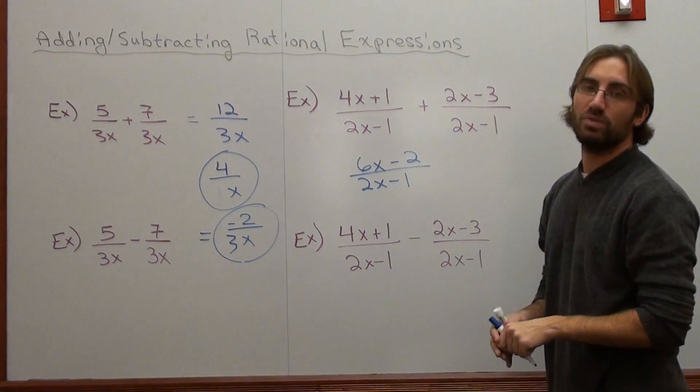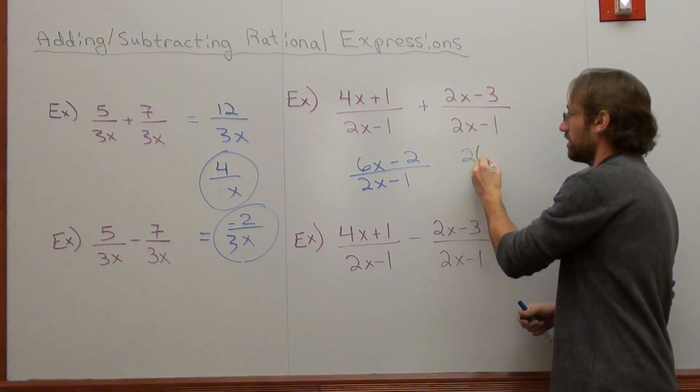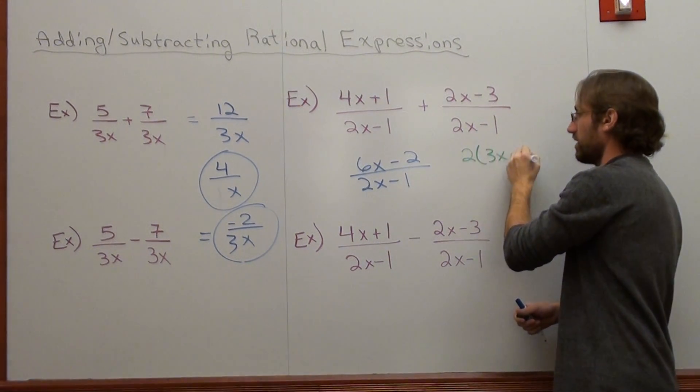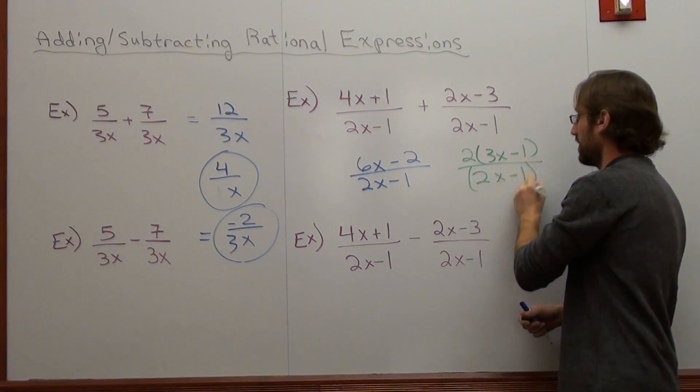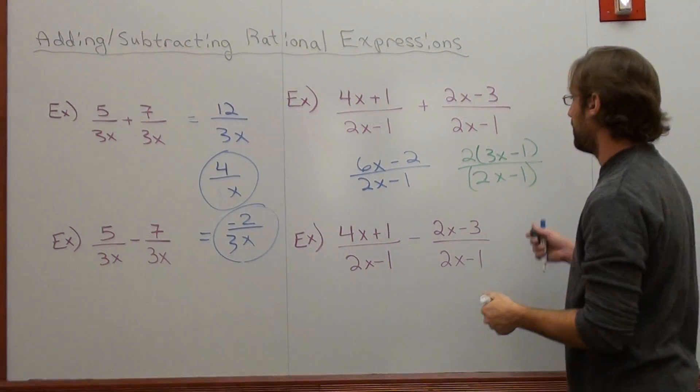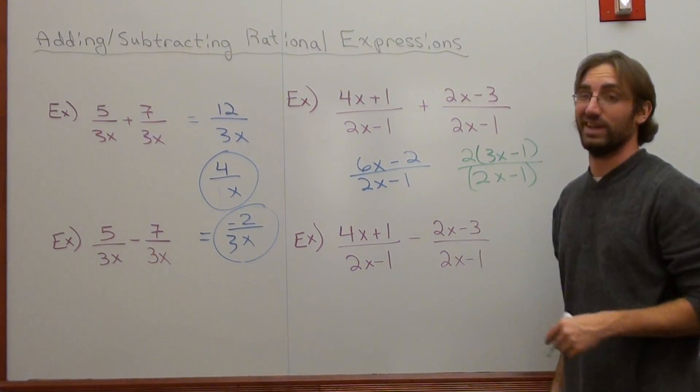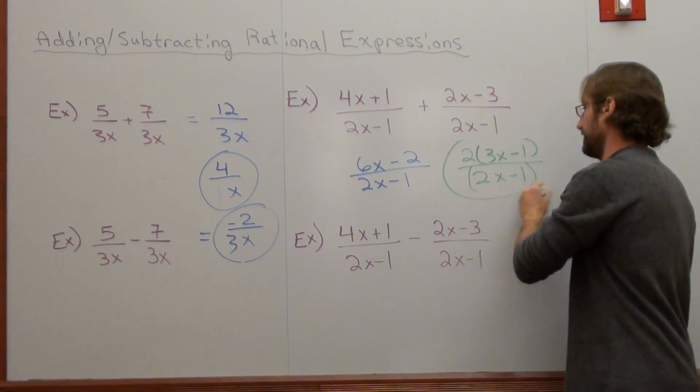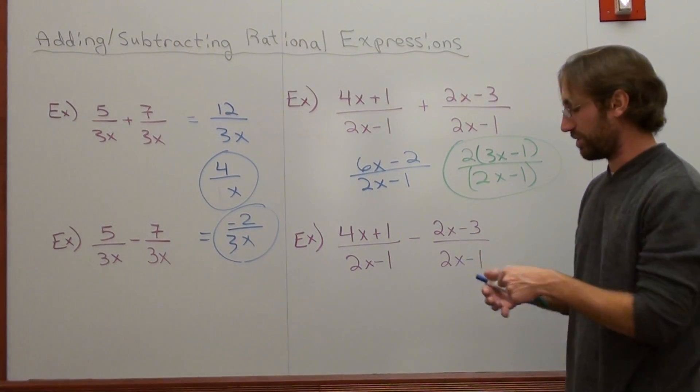I can reduce the numerator. I can take out a 2. And when I divide both these terms by 2, I have 3x subtract 1 over 2x minus 1. Still can't do anything, but get in the habit of factoring when you're supposed to factor, because maybe you could have divided that one out. So the most difficult step there was the factoring step, as it will usually always be.